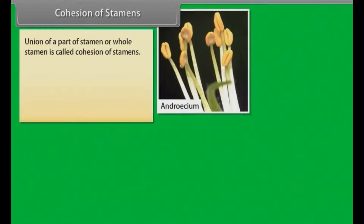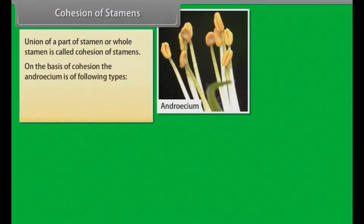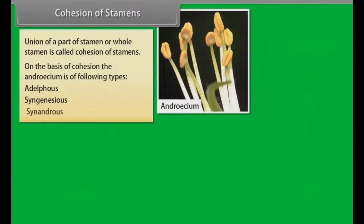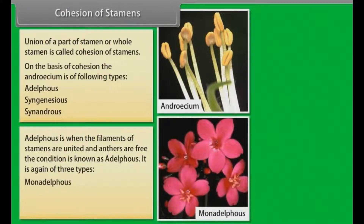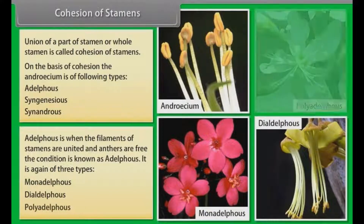Cohesion of stamens. Union of a part of stamen or a whole stamen is called cohesion of stamens. On the basis of cohesion, the androecium is of following types: Adelphous, Syngenesious, and Synandrous. Adelphous is when the filaments of stamens are united and anthers are free. It is again of three types: Monadelphous, Diadelphous, and Polyadelphous.